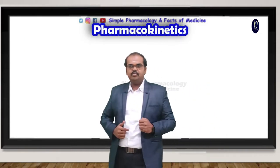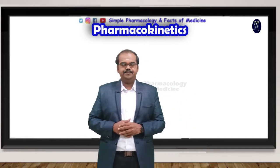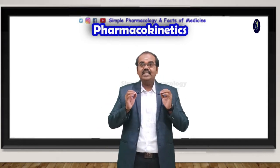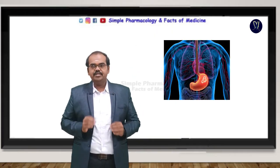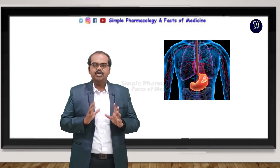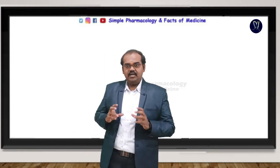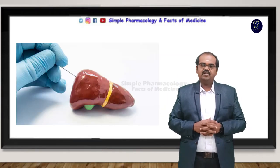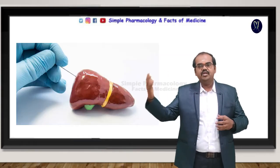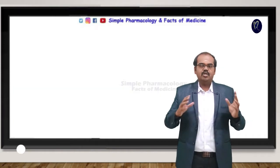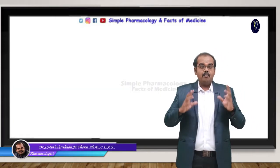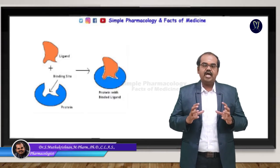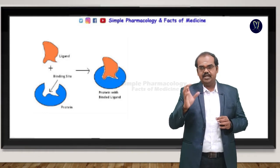Next are the pharmacokinetic properties of terbinafine. We already stated that terbinafine is an orally effective drug — more than 70% of the drug is absorbed through the oral route. However, the bioavailability is only about 40%, because approximately 30% of the drug is lost during first-pass metabolism, giving a bioavailability of just 40%.